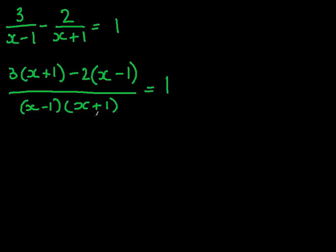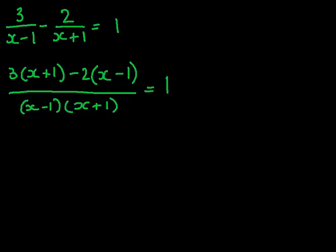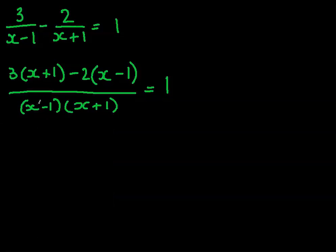So once we've done that, we can multiply everything out. 3 times by x equals 3x, 3 times by 1 equals 3, minus 2 times by x equals minus 2x, and minus 2 times by minus 1 equals plus 2.